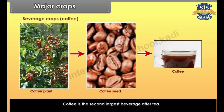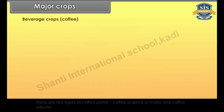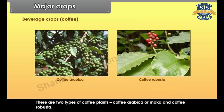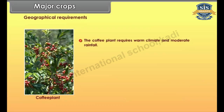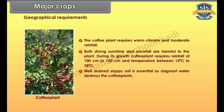Coffee is the second largest beverage after tea. The coffee plants are cultivated for seeds and beans which are roasted and sold for brewing coffee. There are two types of coffee plants: Coffee Arabica or Mocha and Coffee Robusta. The coffee plant requires warm climate and moderate rainfall. Both strong sunshine and snowfall are harmful to the plant. During its growth, the coffee plant requires rainfall of 100 cm to 150 cm and temperature between 15 degrees Celsius to 28 degrees Celsius. Well-drained, sloppy soil is essential as stagnant water destroys the coffee plants.